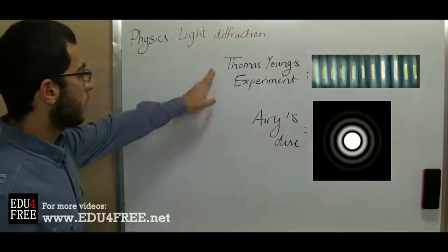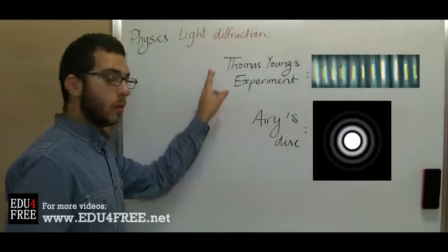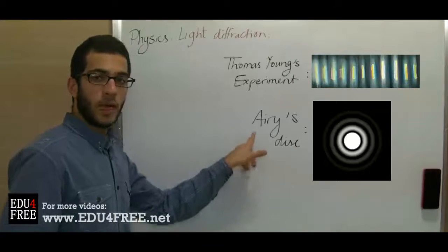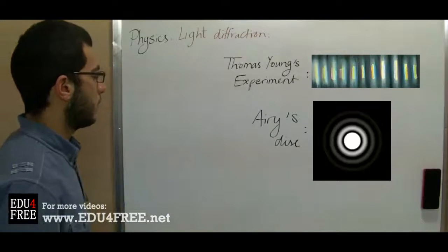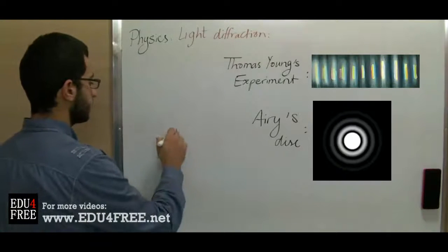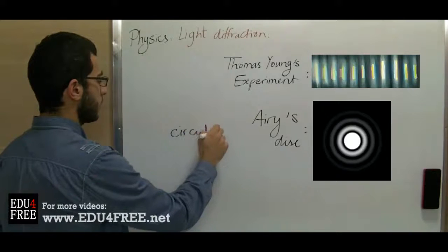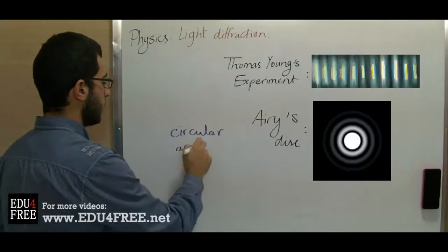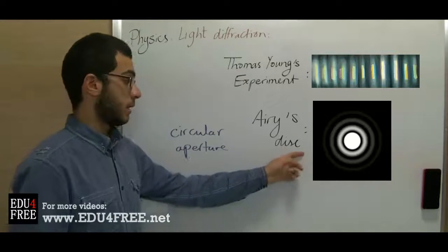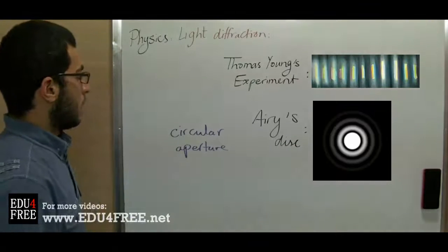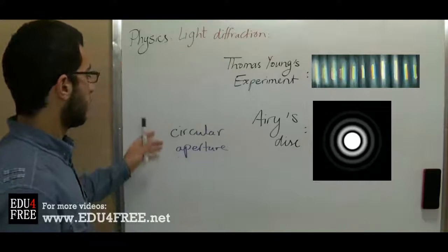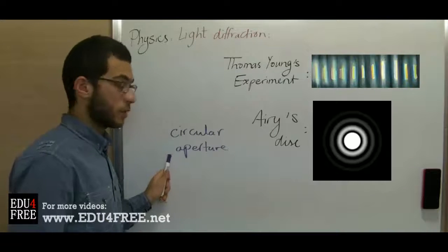Now in the Thomas Young experiment the light passed through a double slit. Now the light here passes through a circular hole or a circular aperture. Now we will get a pattern that looks something like this.